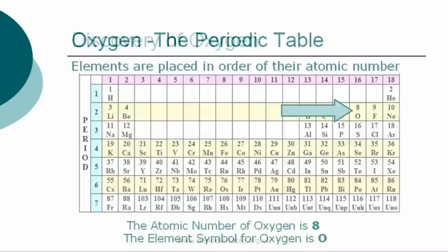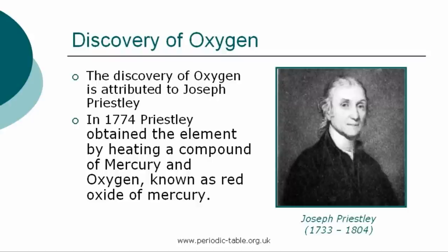The atomic number of oxygen is eight. The element symbol for oxygen is O. The discovery of oxygen is attributed to Joseph Priestley. In 1774, Priestley obtained the element by heating a compound of mercury and oxygen known as red oxide of mercury.